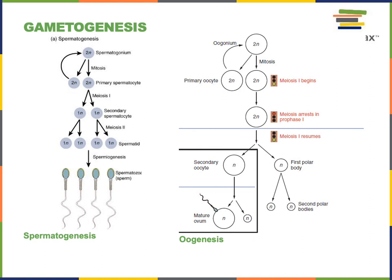Gametogenesis is the production of the gametes. In men, gametogenesis is also known as spermatogenesis and produces the sperm. In women, gametogenesis is also known as oogenesis and produces the ova. Both spermatogenesis and oogenesis initially start with mitosis to produce the stem cells. The diploid stem cells known as primary spermatocytes are produced inside the testes and then enter into meiosis, going through two rounds of cell division to produce four haploid spermatids, which are immature cells that will finish maturation to become a sperm, also known as a spermatozoon.